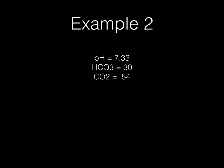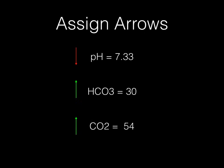Here's example two. The pH is 7.33, the bicarb is 30, and the carbon dioxide is 54. Step one: we assign our arrows and decide how these values are moving from normal. pH has dropped below 7.40. Bicarb should normally be 24, so it went up to 30. Carbon dioxide should usually be 40, but in this case it's driven up to 54. We're going to set up our equation and name the primary deficit and compensation.